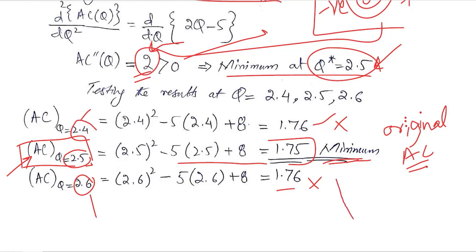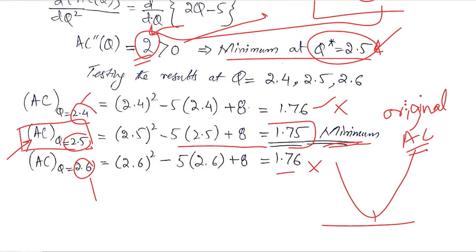Looking at the diagram, the minimum point is at q equals 2.5, with 2.4 to the left and 2.6 to the right. This point is the minimum, and the minimum average cost is 1.75.